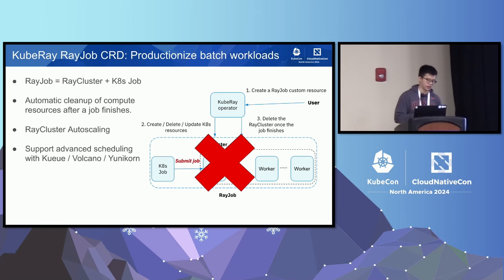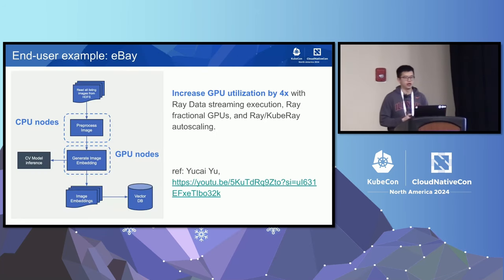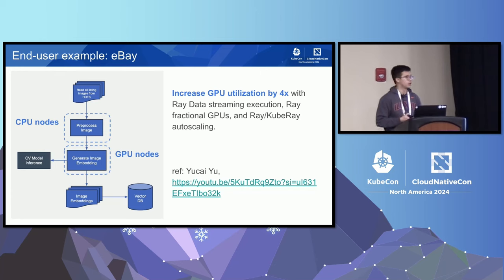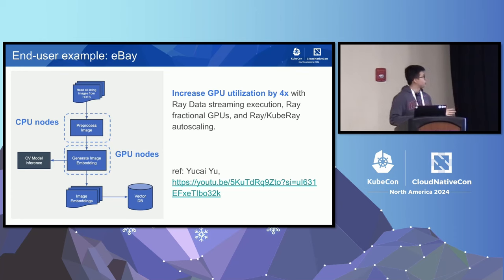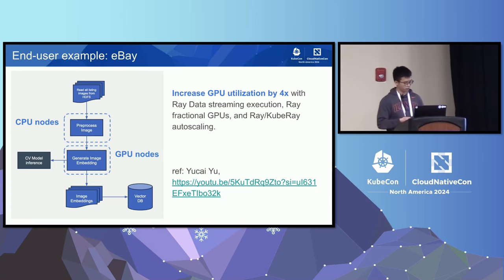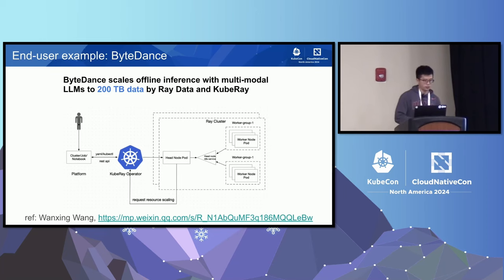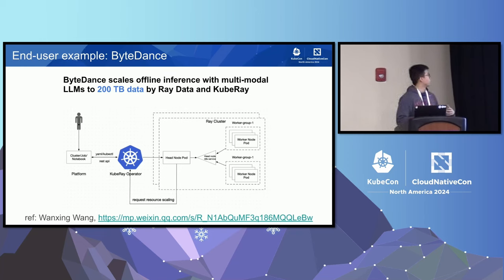For end-user stories: eBay gave a presentation at RaySummit in May 2024 about their batch inference story. The workload was image embedding generation. They used Ray to put preprocessing on CPU nodes and embedding generation GPU inference on GPU nodes, increasing GPU utilization by 4x with Ray Data streaming execution, Ray fractional GPUs, and KubeRay auto-scaling. ByteDance also published an engineering blog about using Ray Data for batch inference with 200 terabytes of data across multi-modal large language model inference.